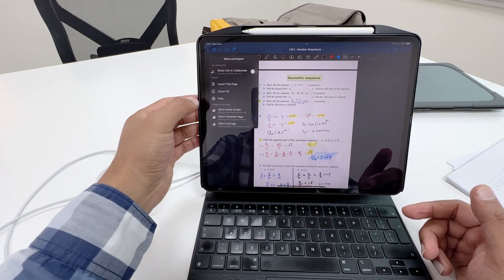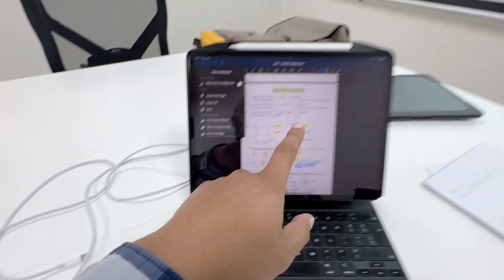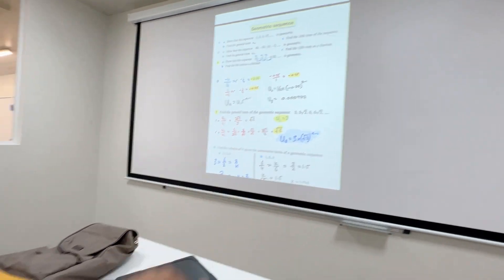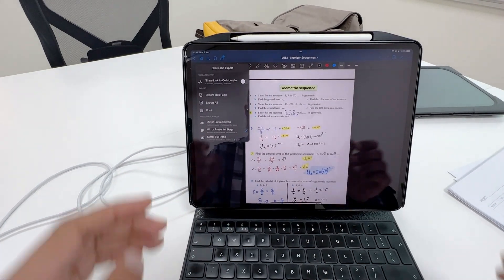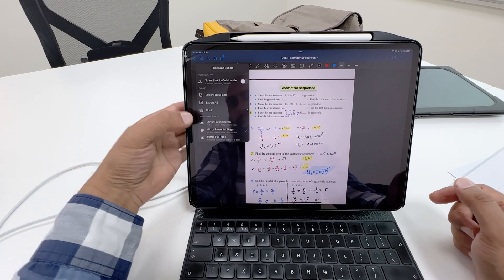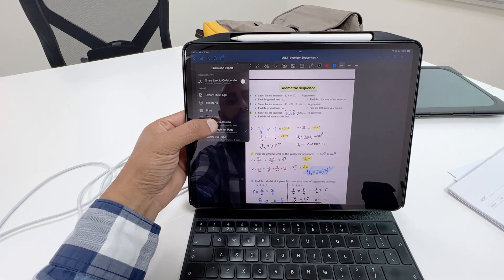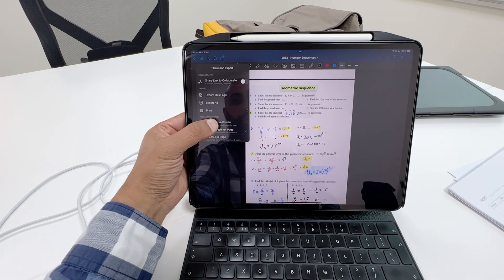In using GoodNotes, there's a couple of features here for presenting. I'm going to show you. By the way, I am mirroring to a projector, so you can see the projector there. When you're mirroring to a projector, you'll see a couple of features. You'll see 'mirror the entire screen.' If I mirror the entire screen, you see how this changes? I'm going to press mirror the entire screen and check how that changes.